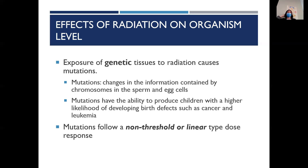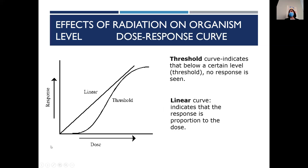Mutation refers to changes in the information contained by the chromosomes in the sperm and egg. Mutations have the ability to produce children with a higher likelihood of developing birth defects and cancer, such as leukemia. Mutation follows a non-threshold or linear type of dose response, whereas somatic effects follow a threshold dose. On the graph, dose is along the X-axis. With genetic/linear response, the minute you start giving that dose, damage starts going up. With somatic tissue, the damage doesn't start until you reach a certain point on the graph, and then it starts going up.